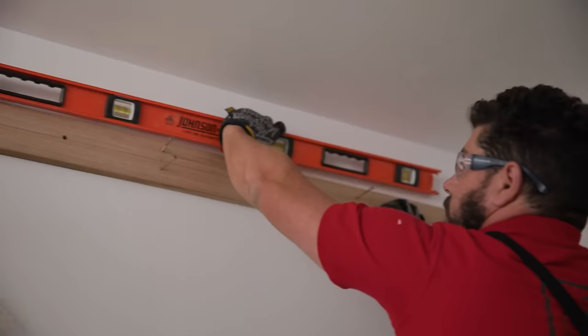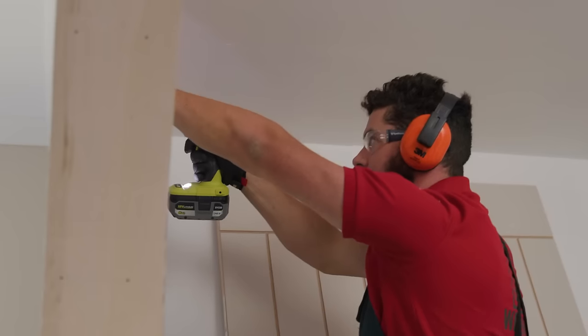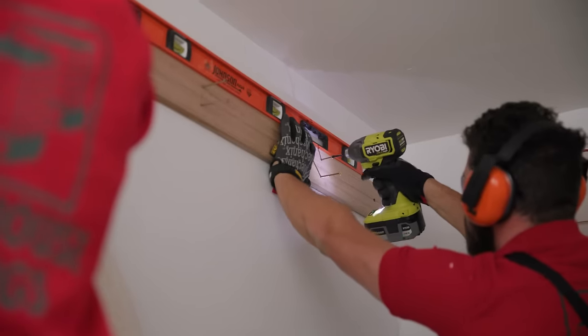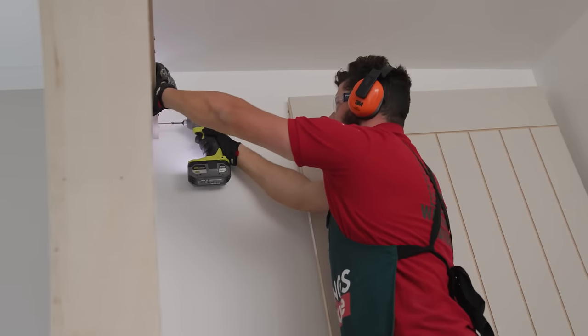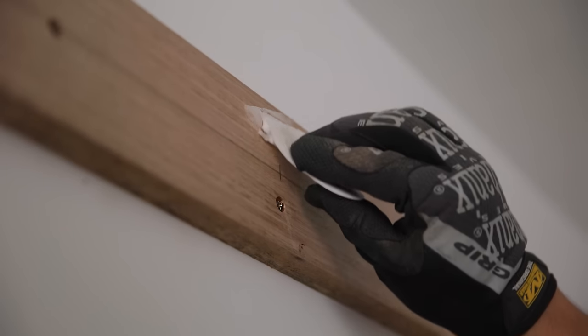With some help, attach it to the wall and make sure it's level. Now's a good time to fill the screw holes. Use a filler, let it dry and then sand and paint it.